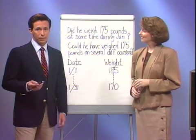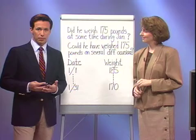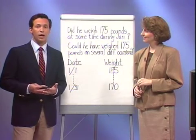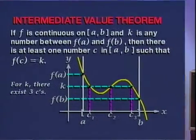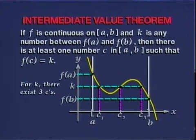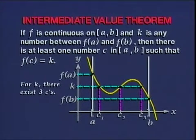The diet problem is an example of an important theorem concerning continuous functions on closed intervals. It's called the intermediate value theorem. If F is continuous on the closed interval from A to B, and K is any number between F(A) and F(B), then there is at least one number C in the closed interval from A to B such that F(C) equals K.